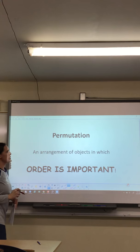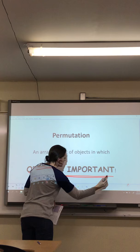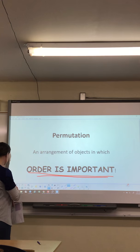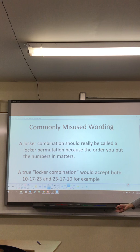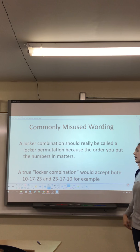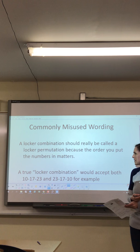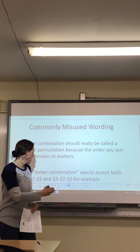A permutation is an arrangement of objects in which order is important. That is the distinction from a combination — order is very important when it comes to permutation. A commonly misused term: a locker combination should really be called a locker permutation, because the order you put the numbers in really does matter. A true locker combination would accept both 10-17-23 and 23-17-10 regardless of order. So really you should call it a locker permutation.